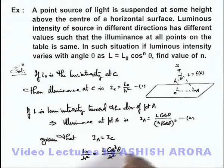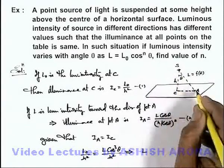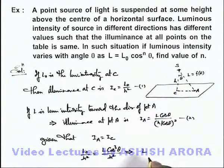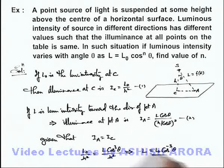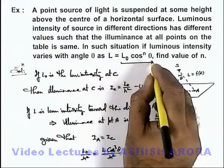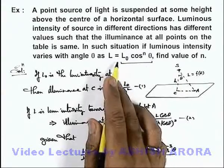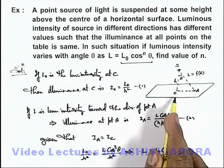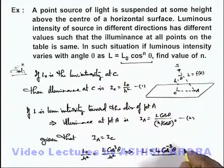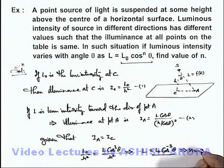We are getting the luminous intensity in the direction towards it as a function of theta, which is given as L = L0 cos^(-3) theta. Now if we compare this relation with the given situation here, L0 would be the luminous intensity in the direction normal to the surface, and the value of n comparing we are getting is equal to minus 3. That will be the answer to this problem.